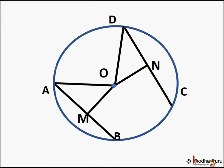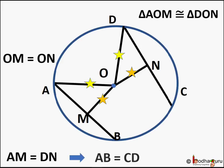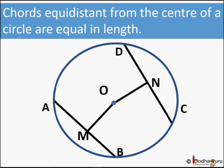We take the same diagram. In triangles AOM and DON, hypotenuse OA and OD are equal as they are radii of the same circle. OM is equal to ON, which is given. So triangle AOM and triangle DON are congruent following the RHS rule. Hence AM is equal to DN. Since AM is half of AB and DN is half of CD — because a perpendicular from the center bisects the chord — we can say AB is equal to CD. This means chords equidistant from the center of a circle are equal in length.